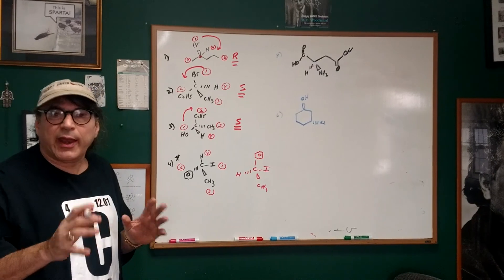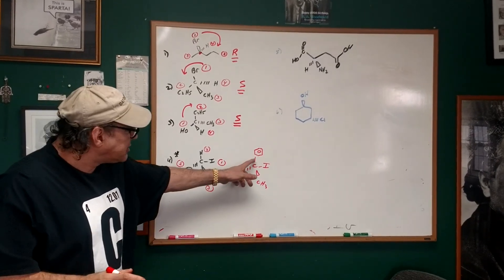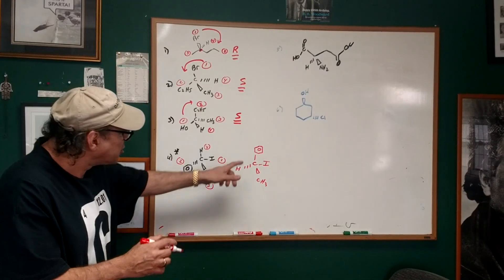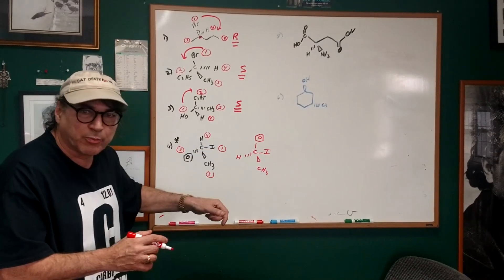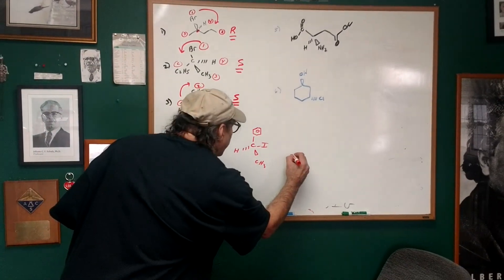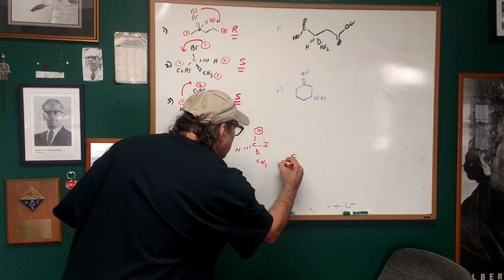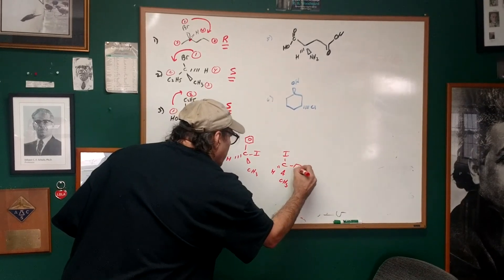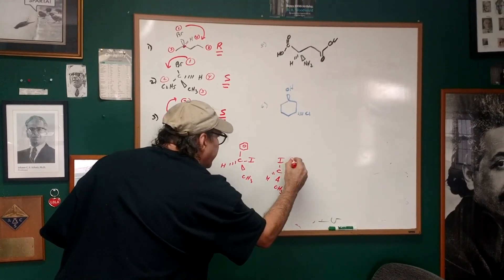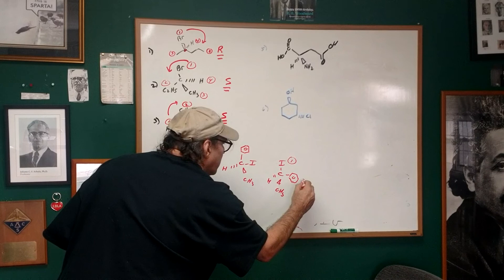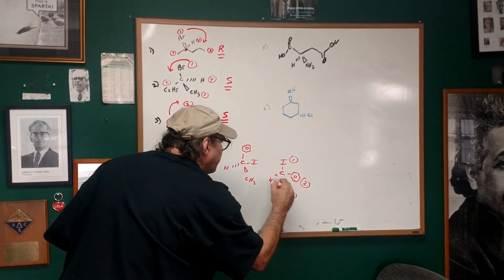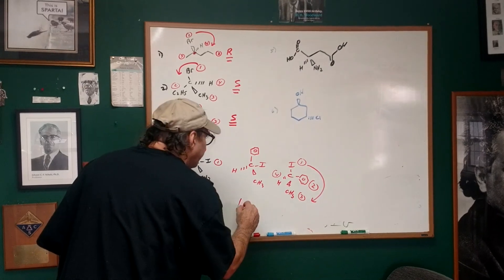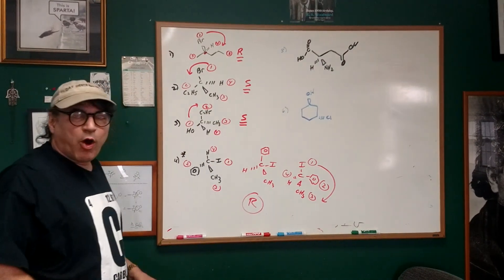Once I did that, I need to switch any two groups. I always like to switch the two groups that have no dash and no wedge on it. So I'm going to switch these two groups. So when I do that, and I switch these two groups, I'm now ready to kill. There's group one, there's group two, there's group three, there's group four. And therefore, we get the final answer of an R configuration.